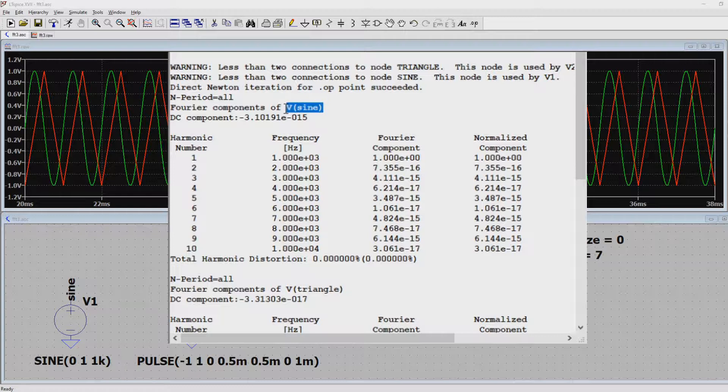LTSpice first did an analysis on the sine wave. As you can see the first harmonic or the fundamental at 1kHz has a peak voltage of 1. But after that there's nothing there in the harmonics. So at the bottom you can see that the total harmonic distortion is 0%.